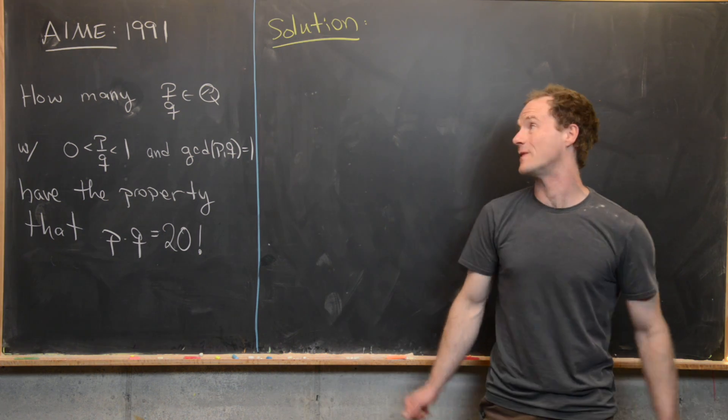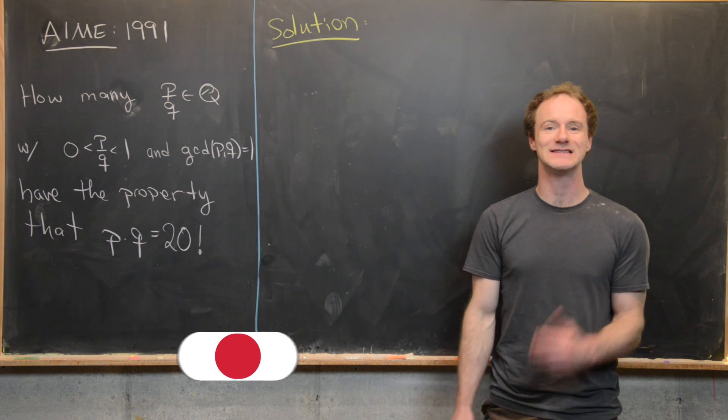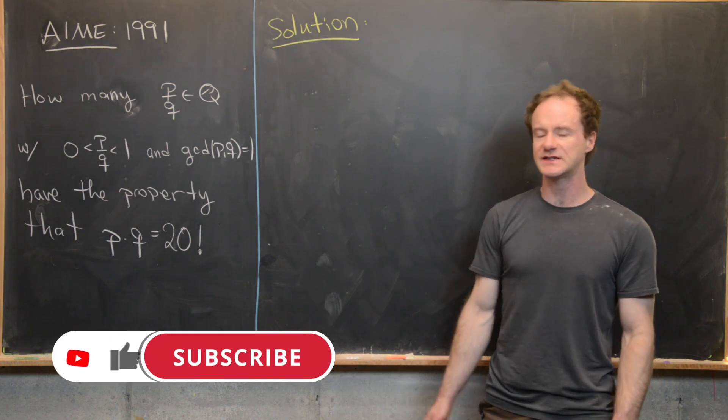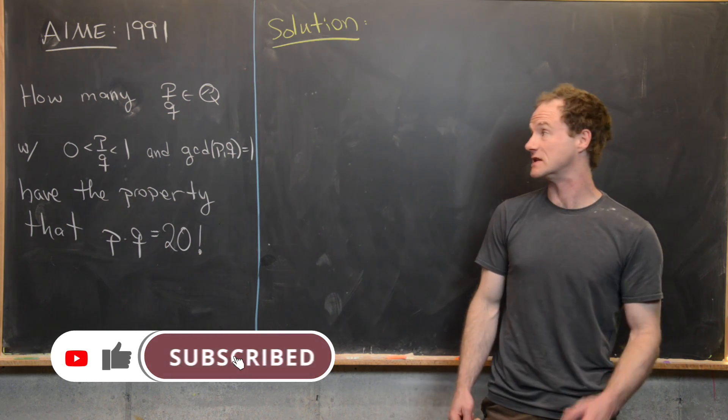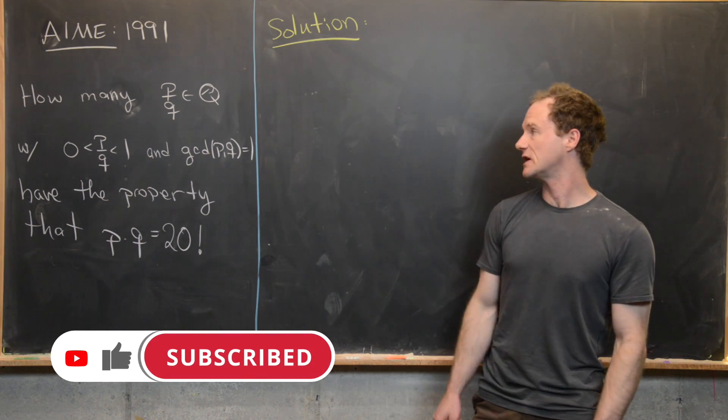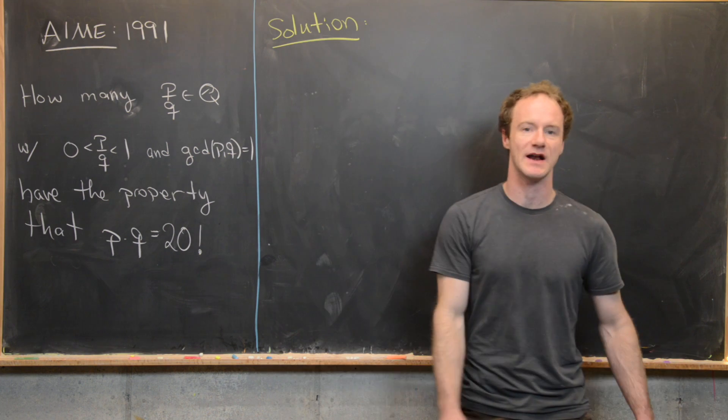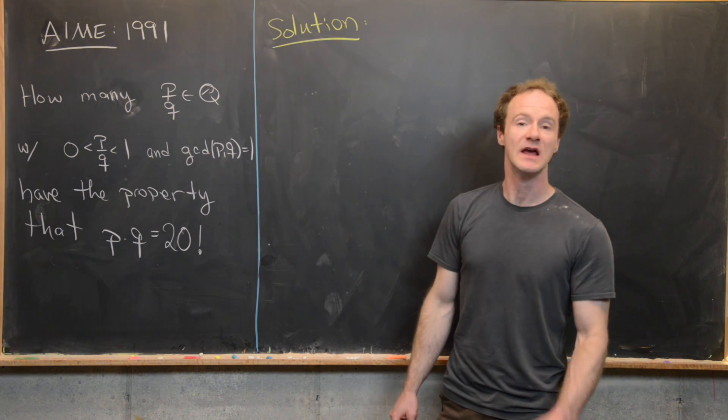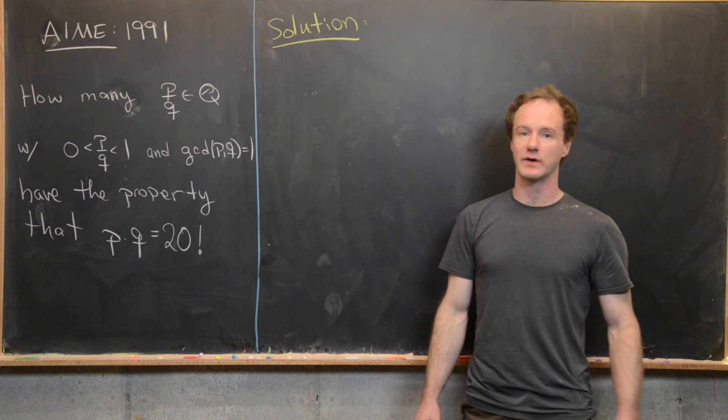Here we're going to look at a quick problem from the AIME, the 1991 edition. This is a mathematics competition in the United States. Our goal is to find out how many rational numbers, which we'll write as P over Q, satisfy these three following properties.